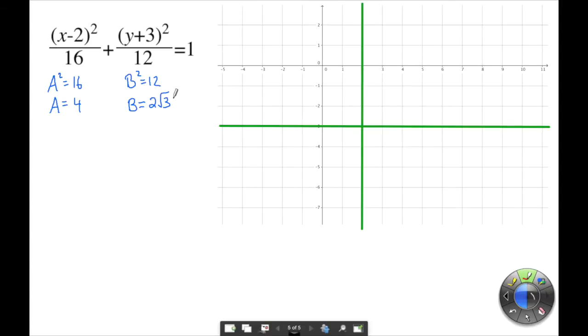Now I'm going to have to come up with a decimal value so we can approximate it for our graph. So 2 square roots of 3 is approximately 3.5. So the major axis is going to have a length of 8. Remember the major axis is double a. And the minor axis is going to have a length of about 7. Remember we rounded this. It's not perfect. Exactly it would be 4 square roots of 3.